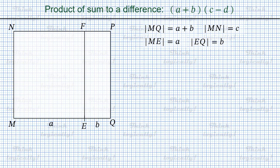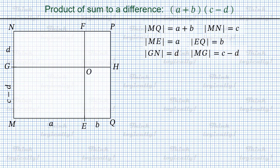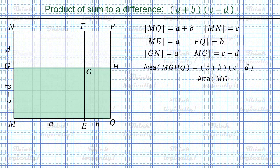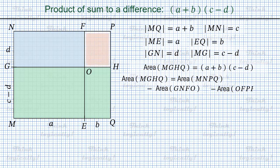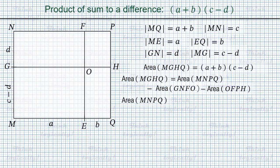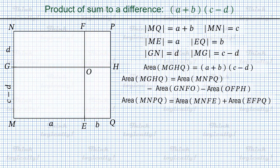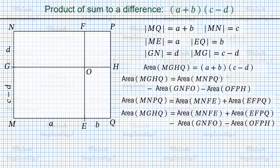On side MN, the length of segment GN equals d, while the length of segment MG is c minus d. And again, we draw segment GH and again get point O. Our objective is the area of rectangle MGOHE, which is a plus b times c minus d. This area is equal to the area of the whole rectangle MNPQ minus the area of rectangle GNFO. At the same time, the area of the whole rectangle MNPQ can be represented as the sum of areas of rectangles MNFE and EFPQ. Combining these two equations gives the expression for the area in terms of four areas, evaluated straight away.